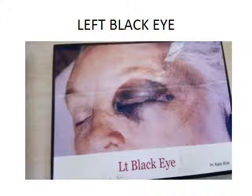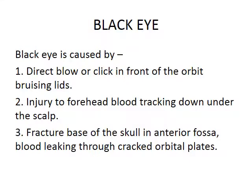The next photograph is of a left black eye. It is mainly caused when a direct blow in front of the orbit gives rise to bruising of the lids. The scalp and forehead are very rich in blood supply; the blood that oozes through the arteries accumulates in the lax tissue present below the lower eyelid or around the lids, giving rise to black discoloration. Injury to the forehead causes tracking of blood under the skull, which comes down and collects around the orbit. Similarly, fracture of the base of the skull in the anterior fossa causes blood to collect in the orbital plates and gives rise to a black eye.